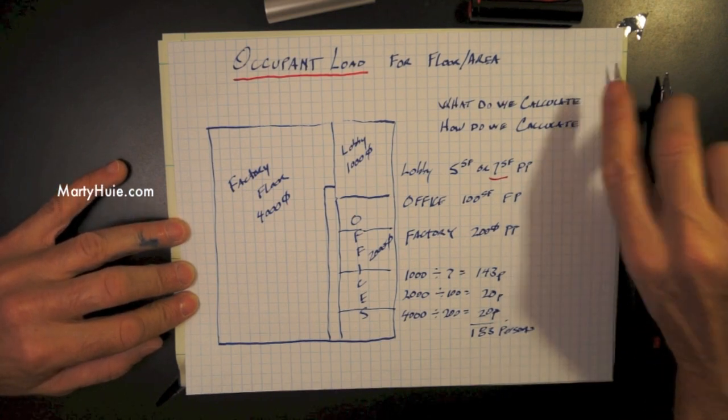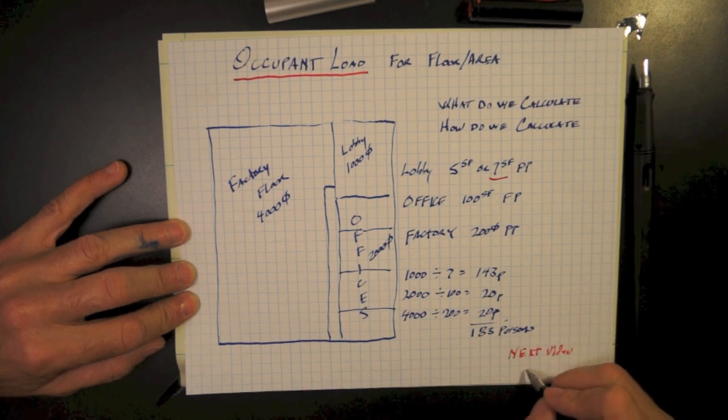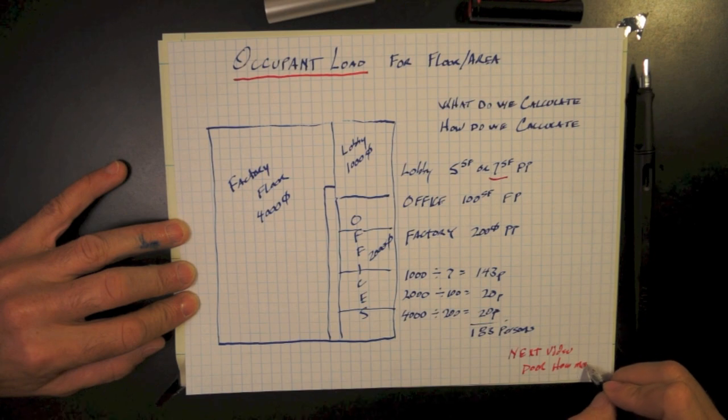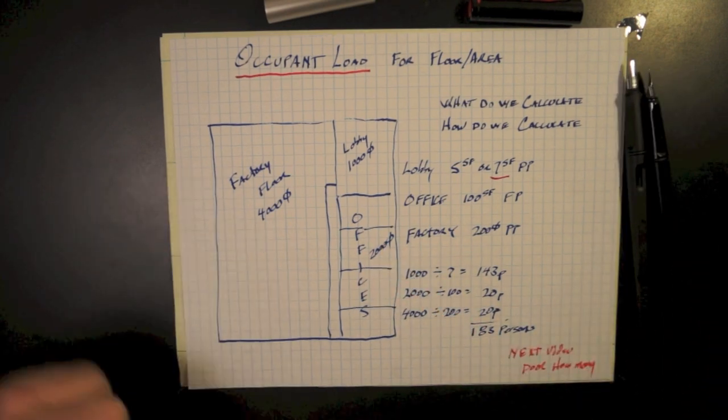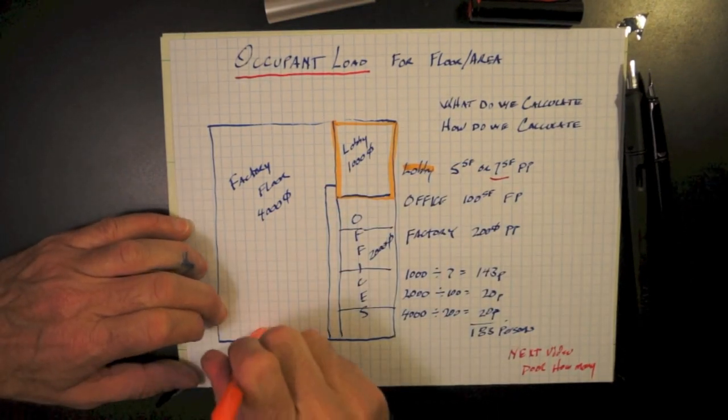One of our next upcoming videos will be on understanding where doors need to be due to the occupant load, the number of people in the space, and how wide or how many doors do we need. This is commonly known as exit inches required.